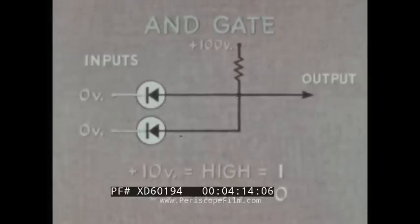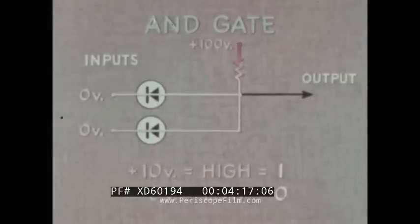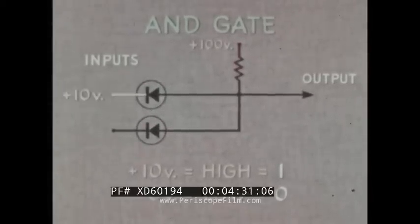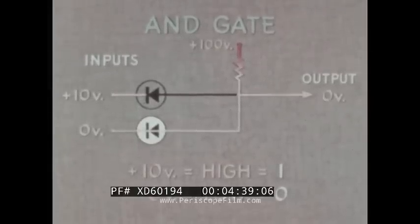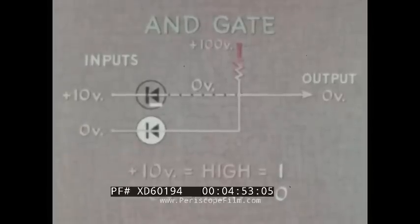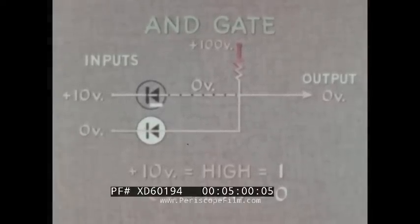When both inputs are low, both diodes again conduct, and with almost no voltage across them, the output voltage will be low — satisfying the zero-and-zero for a zero output requirement. When one input is high and the other low, the low input diode conducts and drops the output point to the low voltage. This voltage on the anode of the high input diode makes it more negative than the cathode and causes it to cut off. It therefore cannot raise the output voltage above low, thus it remains low. The requirement — zero and one inputs with a zero output — is thus satisfied.